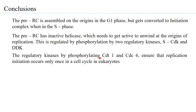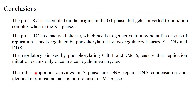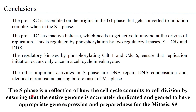Activation of the helicase is regulated by phosphorylation by two regulatory kinases, S-CDK and DDK. These kinases, by phosphorylating CDT1 and CDC6, ensure that replication initiation occurs only once in a cell cycle in eukaryotes. The important activities in S phase are DNA repair, DNA condensation, and identical chromosome pairing before the onset of M phase. The S phase reflects how the cell cycle commits to division by ensuring the entire genome is accurately duplicated and prepared for mitosis.